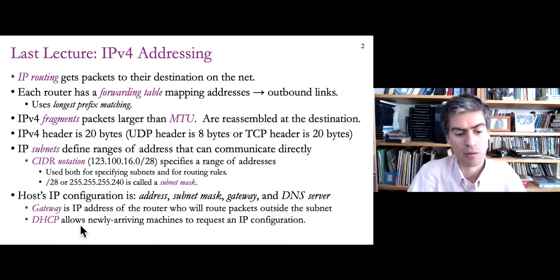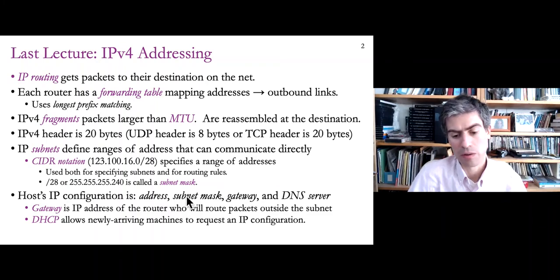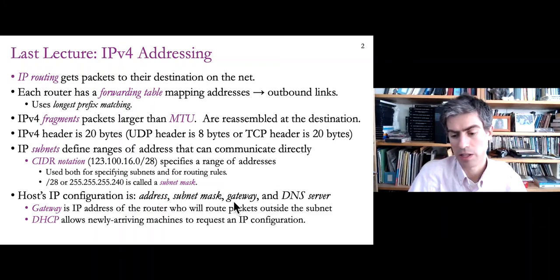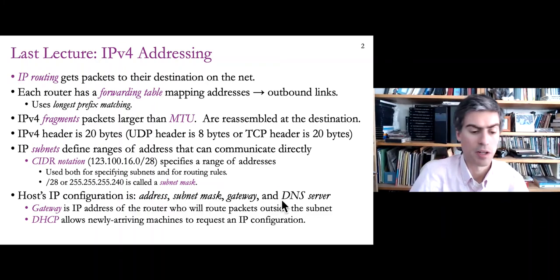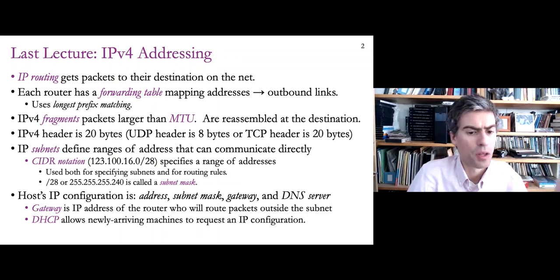DHCP, Dynamic Host Configuration Protocol, is a protocol that uses local broadcasts to allow newly arriving machines to request their IP configuration — those four things I just mentioned. A machine can move around to different networks and get a different IP address when it joins a new network because it's a different subnet, with a new gateway and potentially a new DNS server.